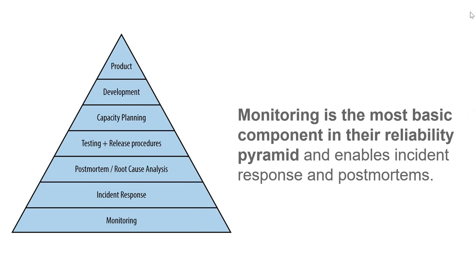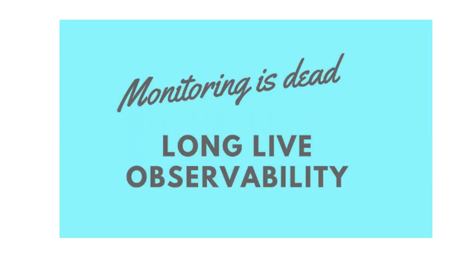What is the difference between monitoring and observability? Monitoring is the most basic component in the reliability pyramid. The reliability pyramid includes product, development, capacity planning, testing approach, post-mortem incident response, and monitoring. Nowadays, monitoring is dead — we are talking about observability.